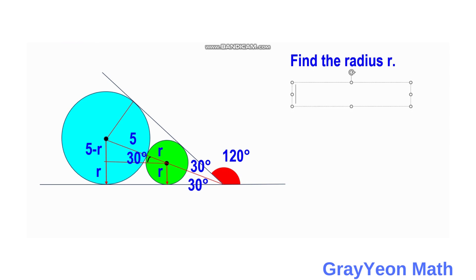We focus on this small triangle. The sine of 30 degrees is equal to the opposite, which is 5 minus R, divided by the hypotenuse, which is 5 plus R.